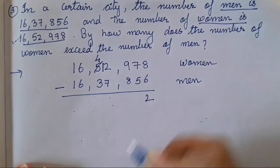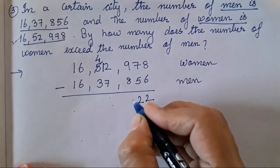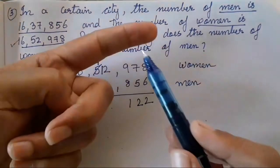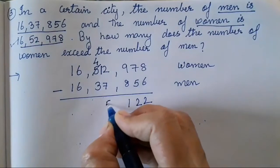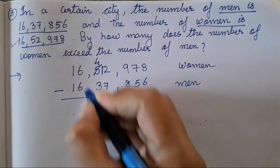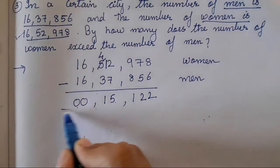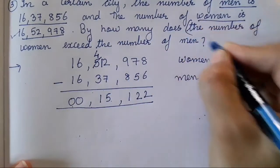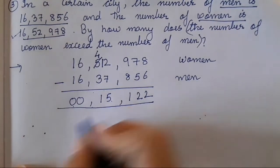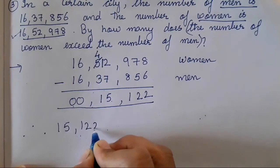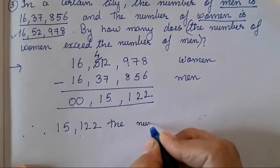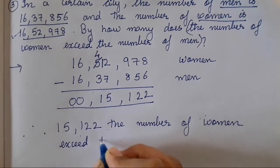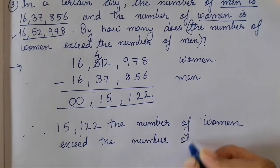8 minus 6 is 2. 7 minus 5 is 2. 9 minus 8 is 1. After 7: 8, 9, 10, 11, 12 — so that gives 5. 4 minus 3 is 1, and 16 minus 16 is 0 since both 16s are the same. So the answer is 15,120. From the question — by how many does the number of women exceed the number of men — here is the conclusion: Therefore, 15,120 the number of women exceed the number of men.